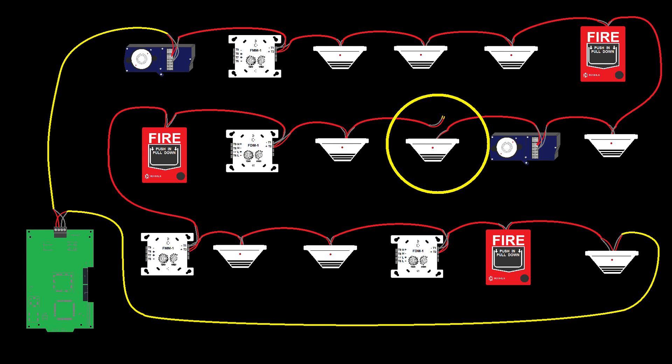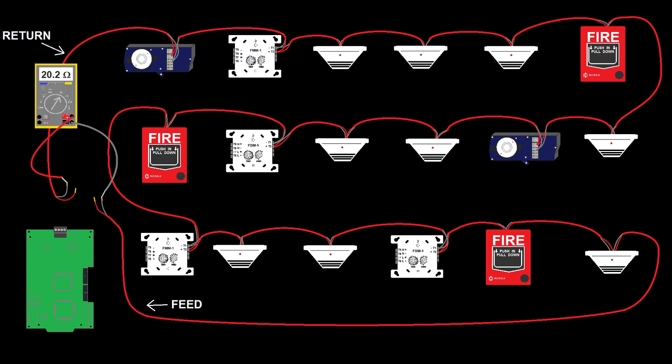The data signal can reach the devices on each side of the open. We will get a trouble on the panel letting us know that the loop has opened because it supervises continuity between the two negative legs of the circuit and between the two positive legs of the circuit, but all devices will still be able to communicate with the panel.